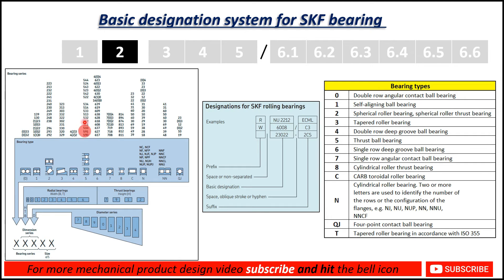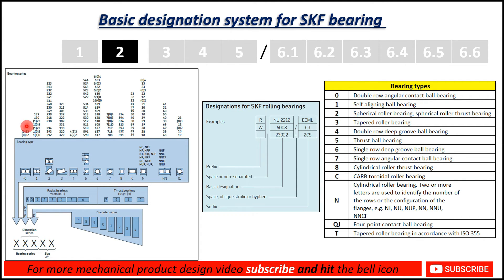This shows the bearing series and the bearing type. You can see this in the diagram and chart. The bearing type starts with zero, one, two, and likewise. Zero refers to double row angular contact ball bearing. These are the bearing series numbers you can see here.